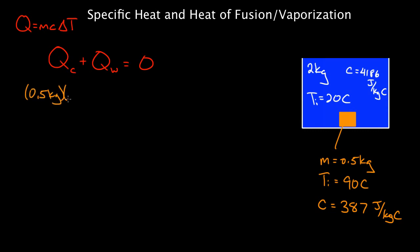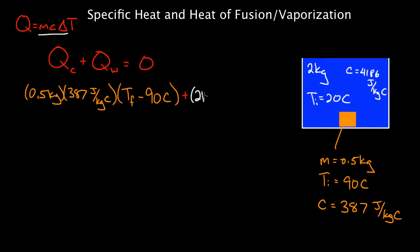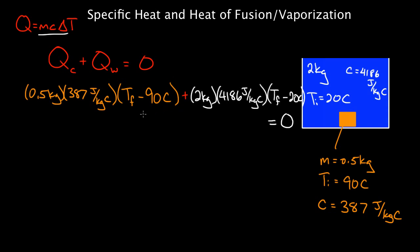So I've got to use the mass of the copper: 0.5 kilograms times the specific heat of 387, times the change in temperature. I don't know the final temperature — I'm going to call it T final — minus the initial temperature of 90 degrees Celsius. Plus the heat gained by the water using the same formula: mass of two kilograms times specific heat of 4,186, times T final minus the initial temperature of 20 degrees Celsius. I set this all equal to zero. You've got one unknown — T final — which is the same variable in both terms.